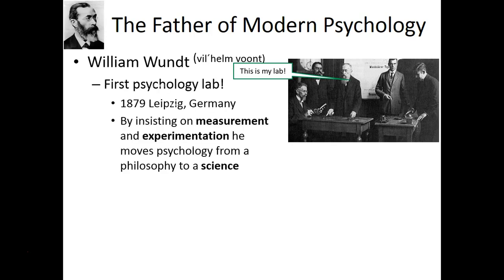He developed psychology as a science in 1879. Why is this significant? It's because he had the first psychological lab. And if he has a lab, he's measuring and experimenting on all these philosophical questions that people have asked for thousands of years. This is what makes psychology an actual science, and why Wundt is considered the father of it.